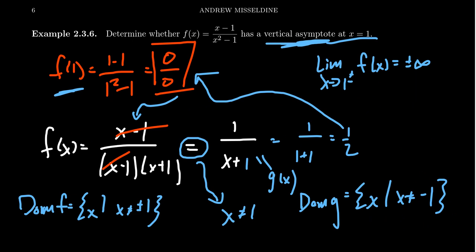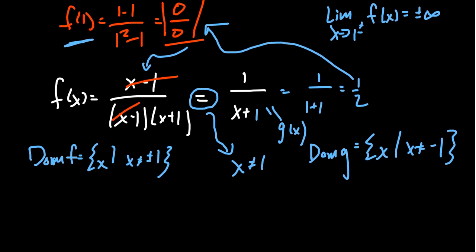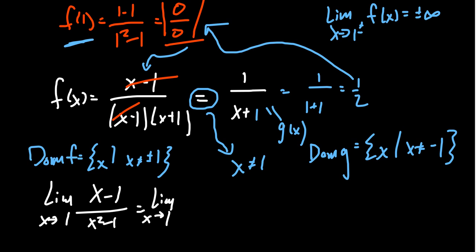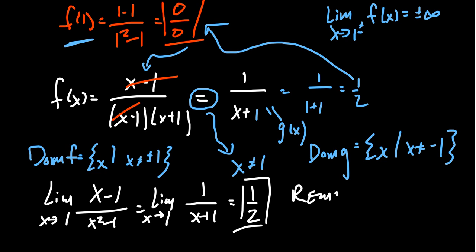We see that the limit as x approaches one of x minus one over x squared minus one equals the limit as x approaches one of one over x plus one, which equals one half. Since the limit equals one half, we don't have a vertical asymptote for the function f at one — we actually have what's called a removed point. Because this limit did not go towards positive or negative infinity but turned out to be a real number, somewhere on the graph we have that missing piece — like Gollum screaming, they stole it from us. Since f and g differ by just the one point, their limits are the same, and the limit of g was not infinity — it was one half.